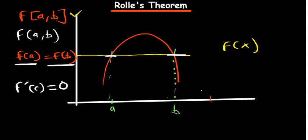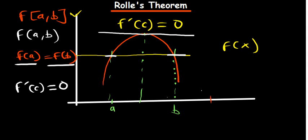Now if all three conditions are met, according to Rolle's Theorem there should be a point c where the derivative is equal to zero. That point is where a function is expected to have a derivative of zero. A derivative can be written as f prime, so when we say f'(c) = 0, we are saying there should be a point c between a and b where dy/dx equals zero.